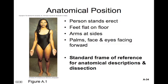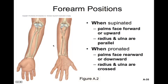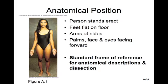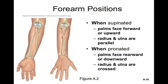In anatomical position, the person is standing erect with their feet flat on the floor and their arms at their sides, with the palms, face and eyes facing forward, just like the girl shown over to the left here. This is our standard frame of reference for all anatomical descriptions and dissections. Forearm positions are supinated when the palms face forward or upward — the radius and ulna are parallel. When pronated, the palms face rearward or downward and the radius and ulna are crossed. With the hands facing forward, the wrists would be supinated.